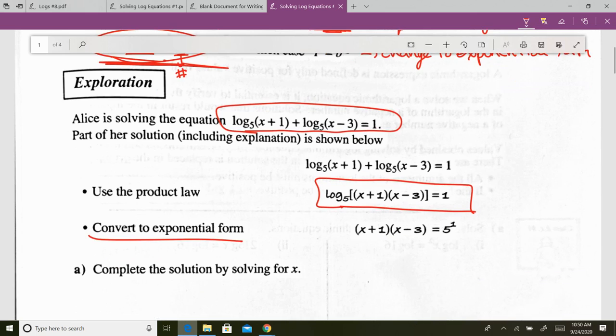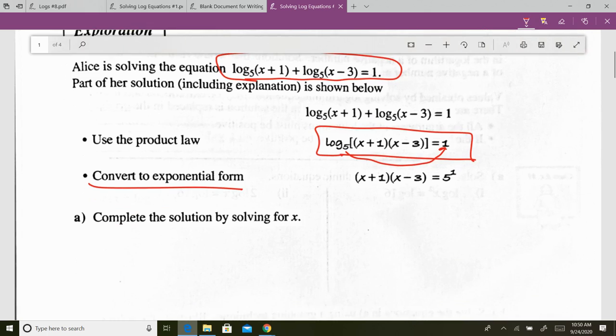So when you do that, the five moves over, kicks it up, and you get the argument equals five to the power of one. From this point forward, it's basically math 11. And math 11 was all about quadratics, right? You just did quadratic, quadratic, quadratic, and factoring.